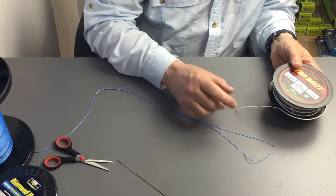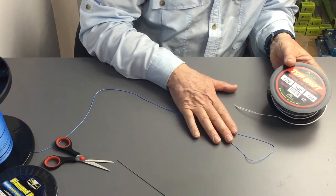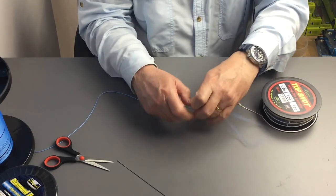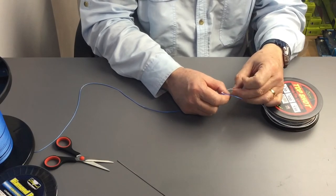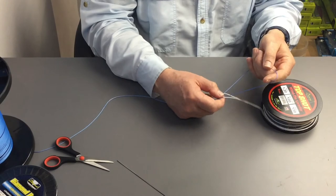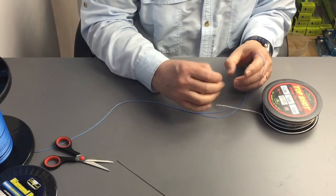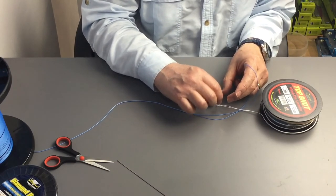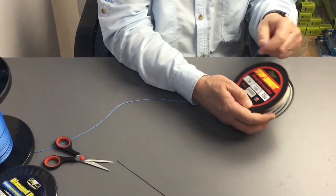Next we're going to attach the top shot to the hollow core loop that we've just made. This is just a simple loop to loop connection, but we go loop to loop multiple times to spread the load of the joint where the two bits of line are. Rather than concentrating all the pressure in one particular point, by doing it multiple times we spread the load over the whole of the knot.